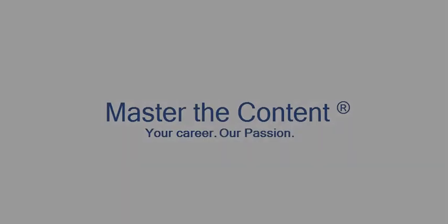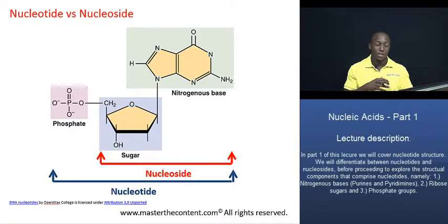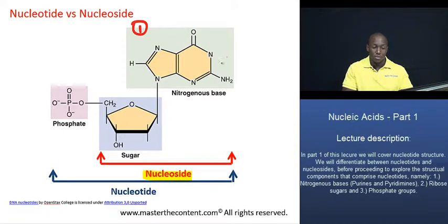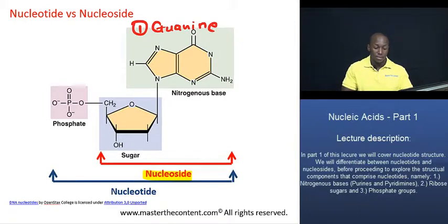Your career, our passion. The next slide that we have on the screen right here actually illustrates this point. As you can see, a nucleoside basically consists of a nitrogenous base, which we have right here. This happens to be a nitrogenous base that we refer to as guanine. And we have our sugar right here — it's a 5-carbon sugar,